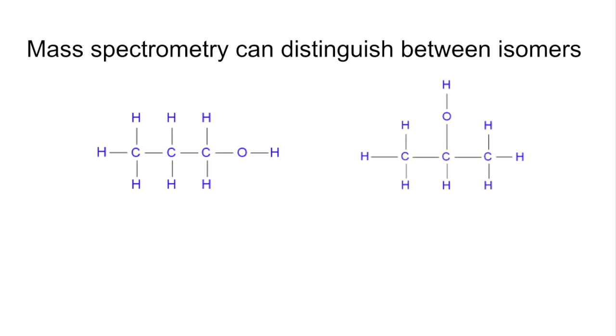So we'll finish with looking at how mass spectrum can distinguish between isomers. We've got propane-1-ol on the left, propane-2-ol on the right. And they're obviously going to have the same molecular ion peak at M/Z 60. So we'll start breaking up the molecule and seeing what kind of fragments we can produce and what their M/Z values would be. So you can see they can both generate fragments at 15 and 45.